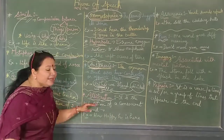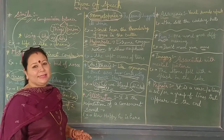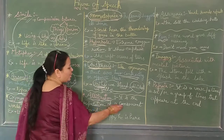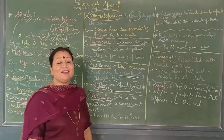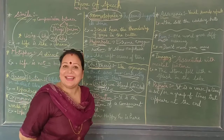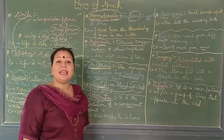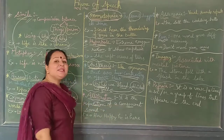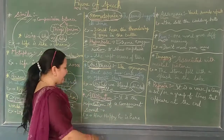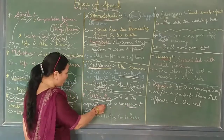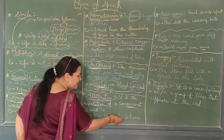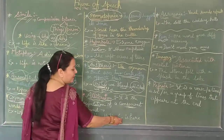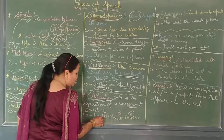Let's move to alliteration. Alliteration is the repetition of a consonant sound. In English we have 26 alphabets, with five vowels: A, E, I, O, U. Leaving the vowels, the remaining are consonant sounds. Alliteration is when one consonant sound repeats continuously in a sentence. For example: 'How happy he is here.' Notice that the consonant H repeats — H, H, H, H. That is alliteration.